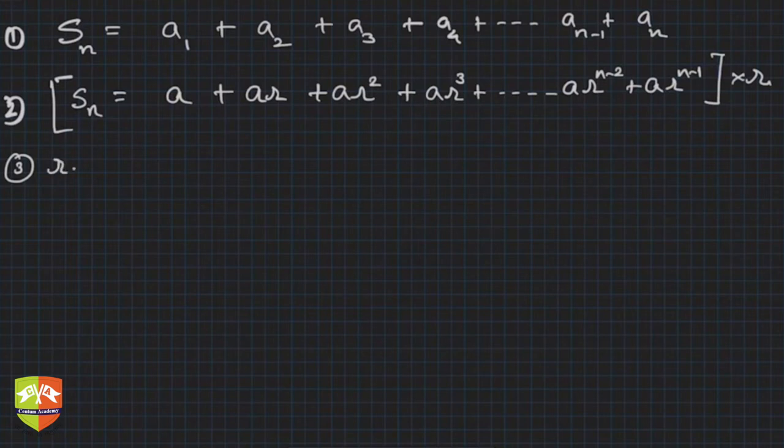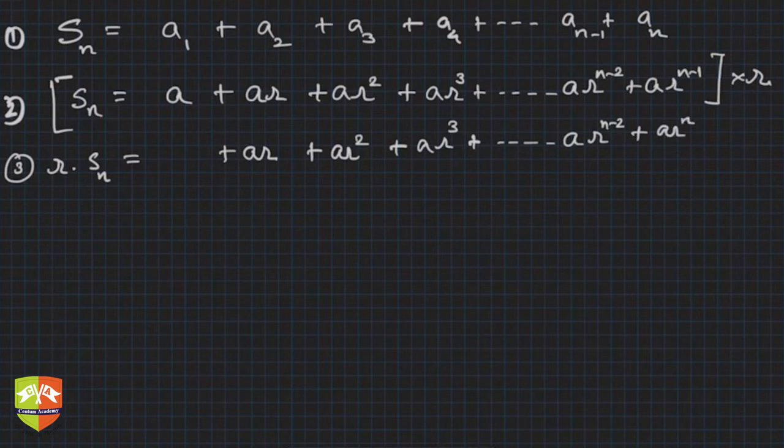This will become r times Sn and the first term, what is the first term after multiplying the right hand side? ar, so I am writing ar here. Then second term is ar squared, third term will be ar cubed, plus here it will be ar^(n-2) plus ar^n. Agree?